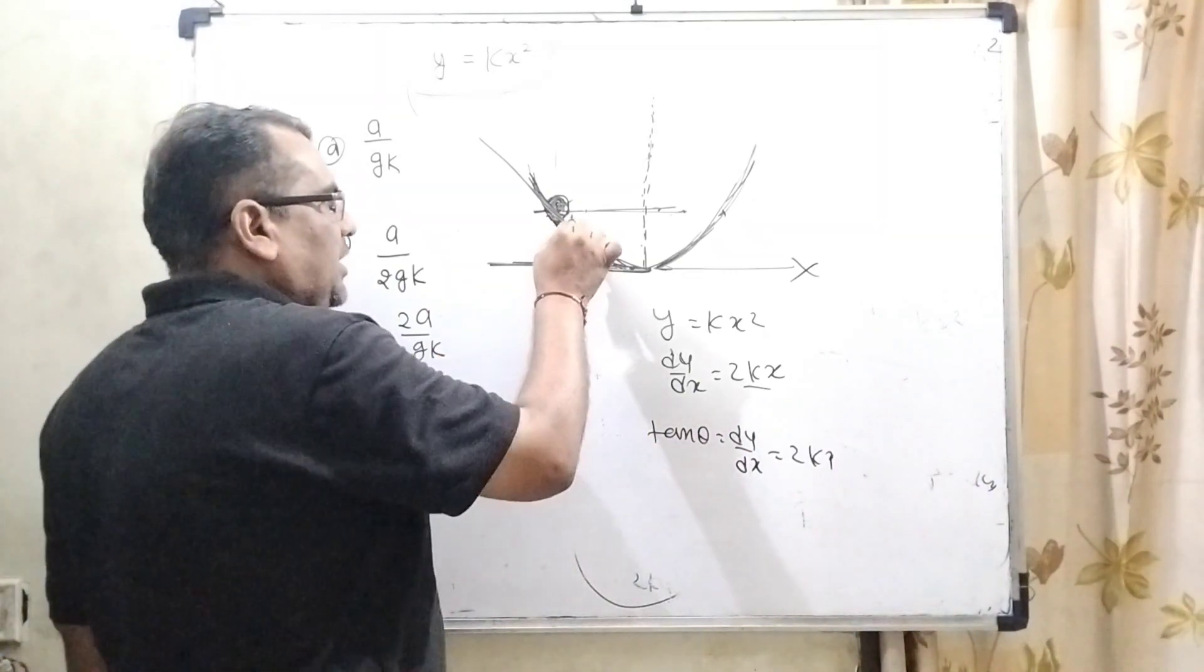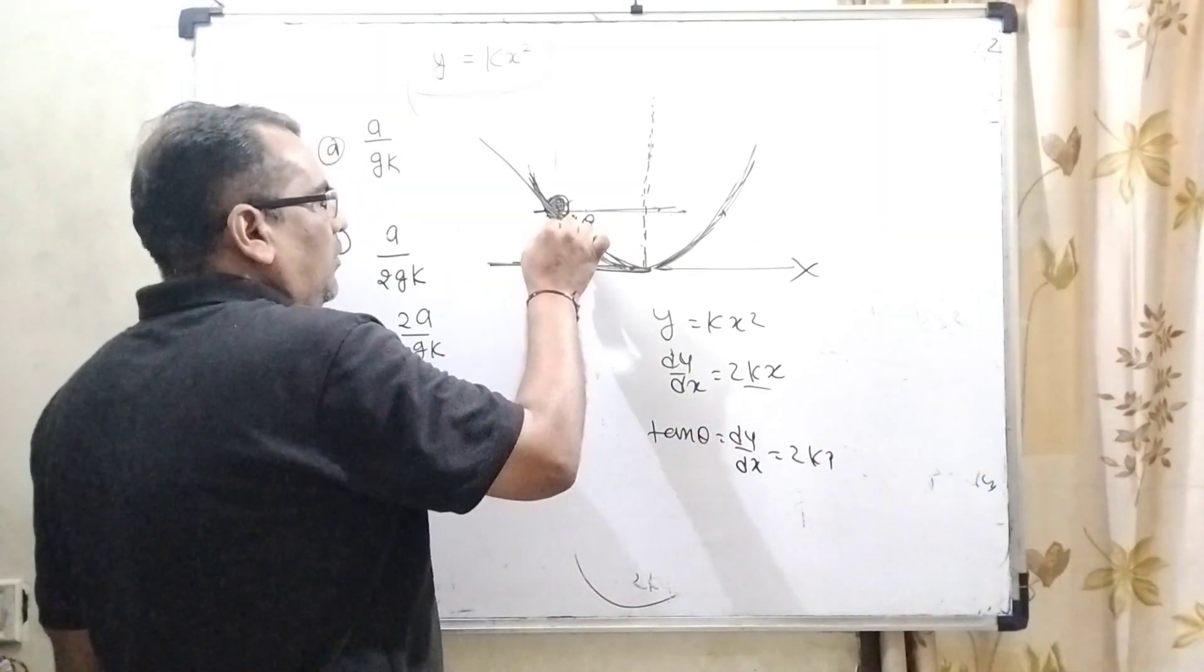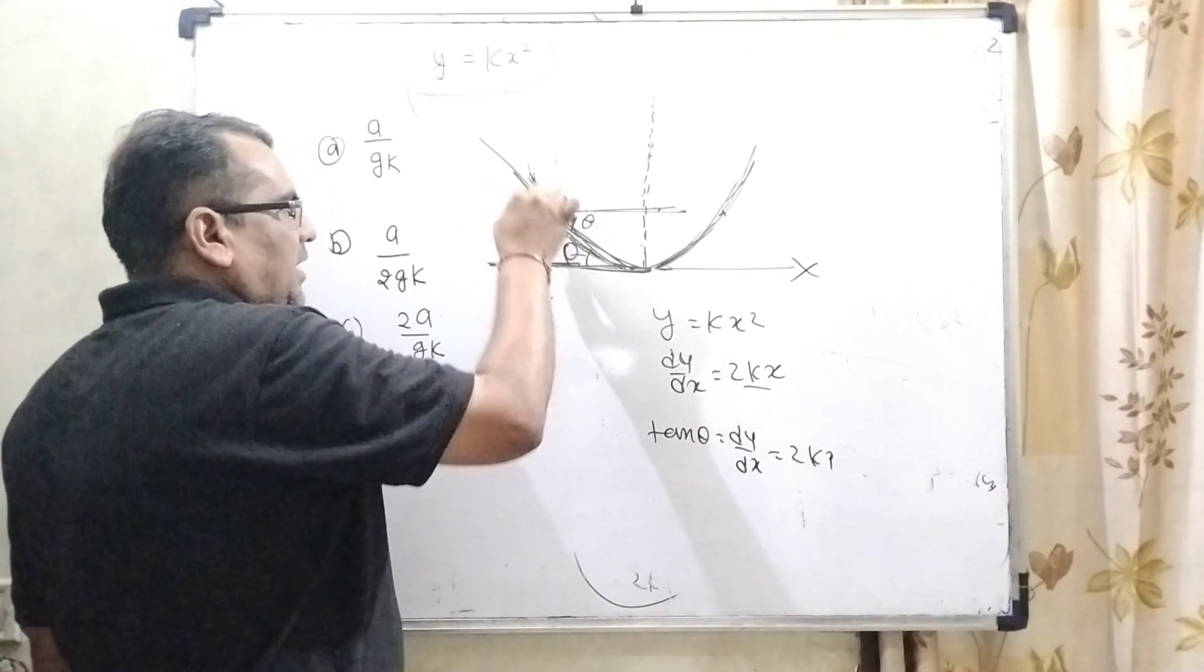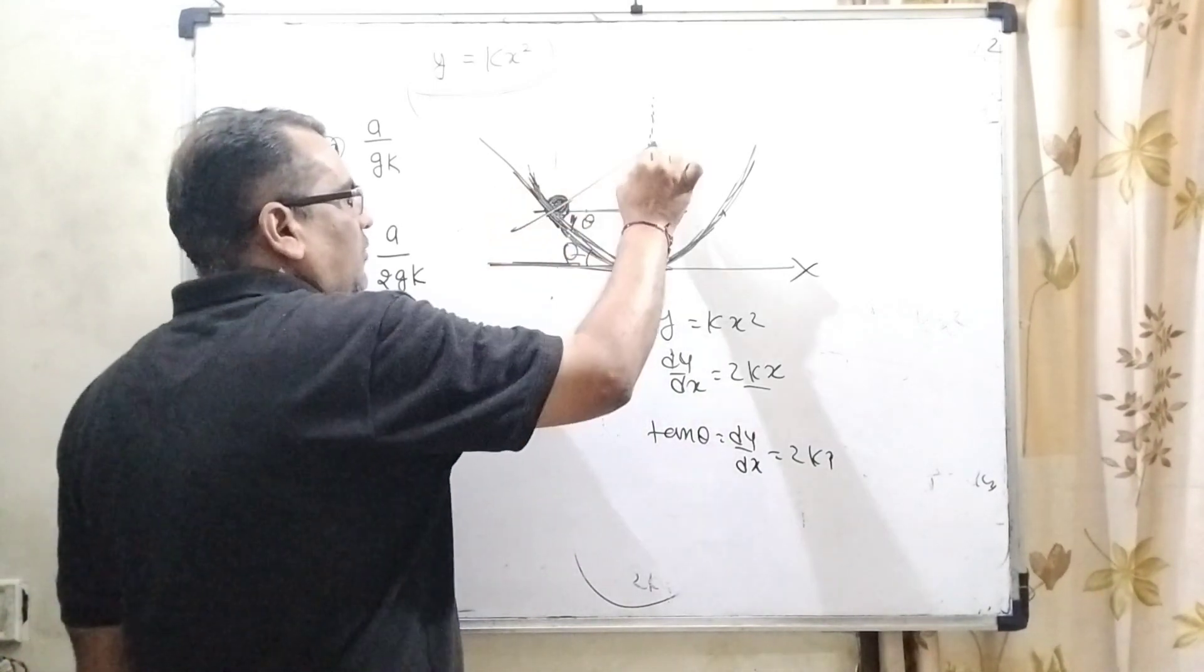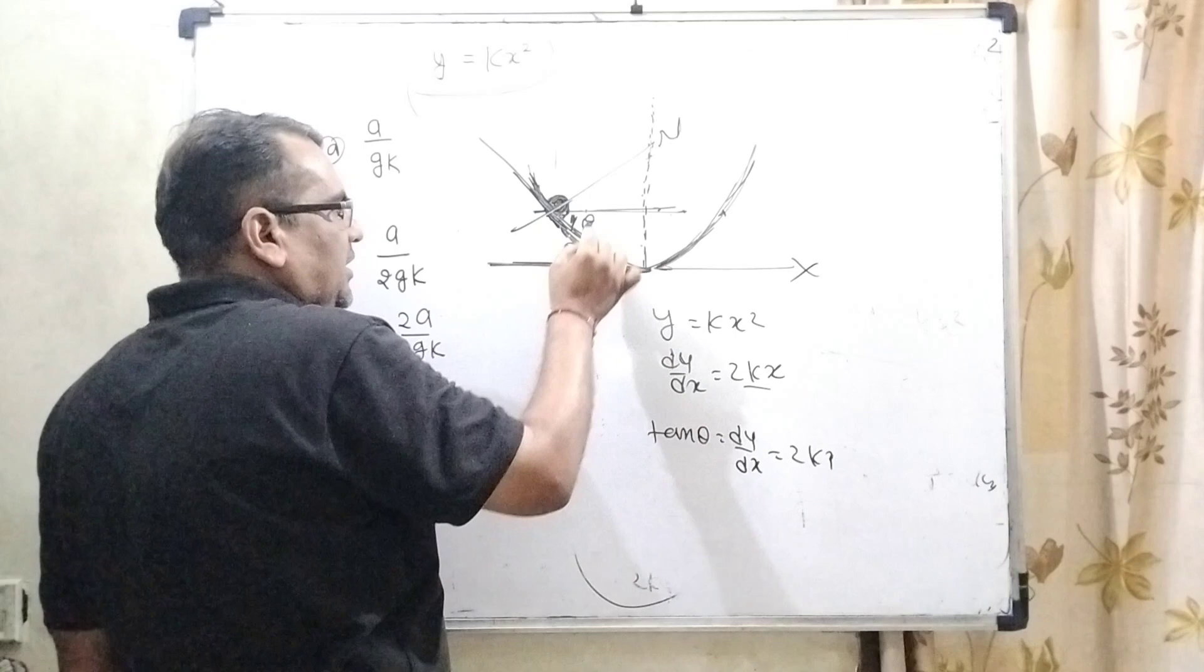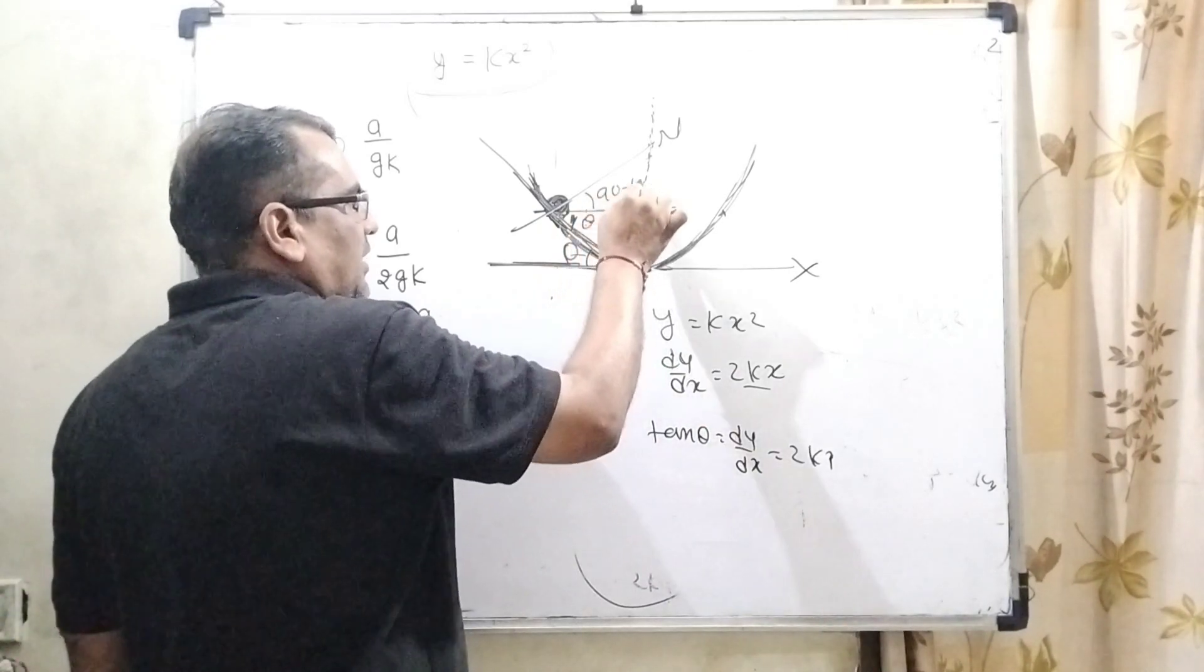So it is also theta. And now you know that very well an object is kept on the surface, that normal force is acting here. So now it is theta, then it becomes 90 minus theta, right.